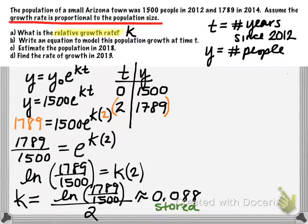So we're ready to answer the parts of the question. So part A is essentially done. What is the relative growth rate? We have a value that K is approximately 0.088.